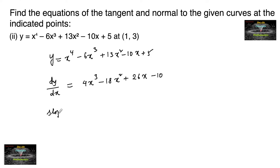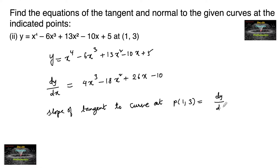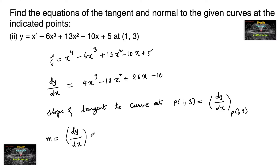The slope of the tangent to the curve at point (1, 3) is dy/dx evaluated at x = 1, y = 3. Let m = dy/dx at (1, 3). Substituting x = 1: